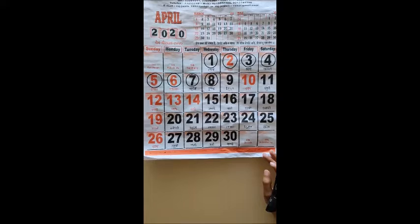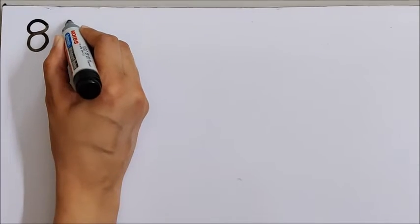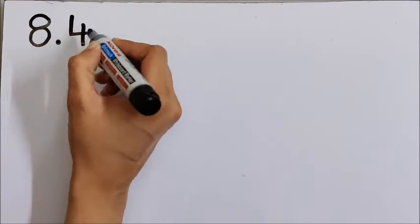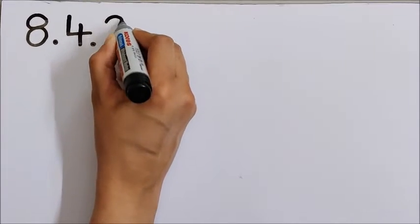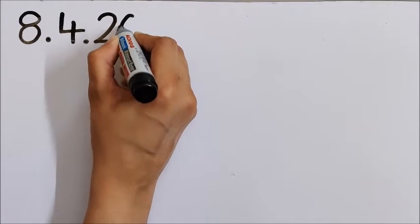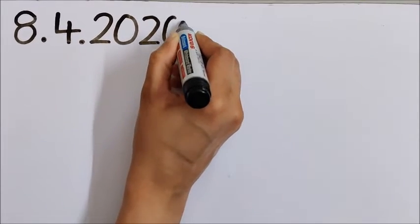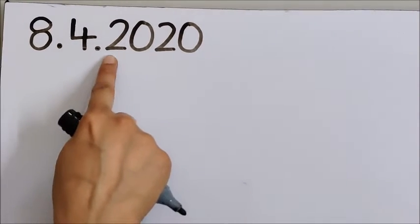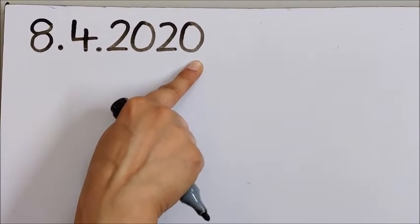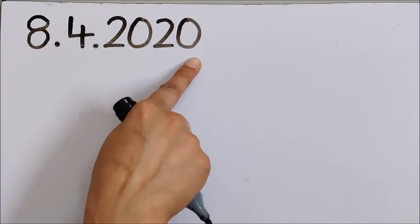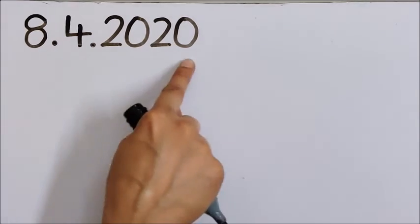So mark the date in your calendar also. So children, let us write the date now. To write the date, we will first write down 8 dot 4 dot 20. So today, whenever you start any written work or any other artwork, do write the date like this.